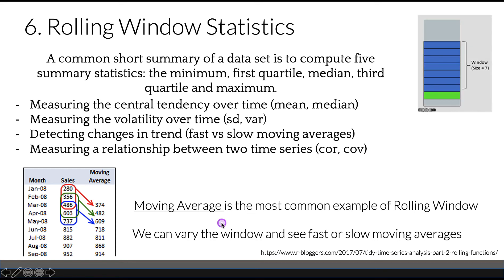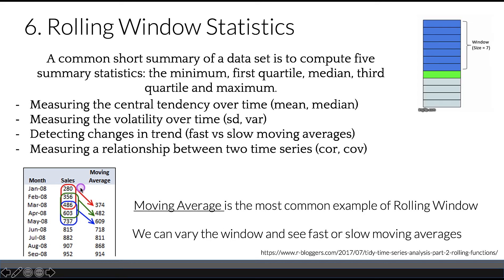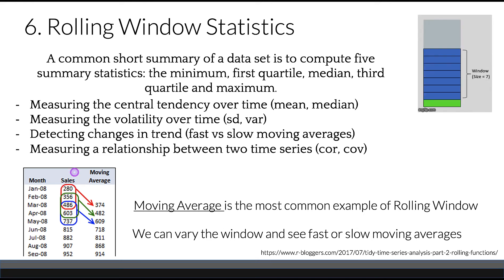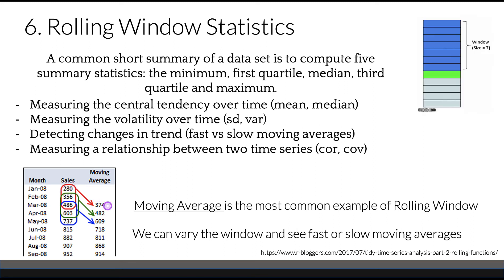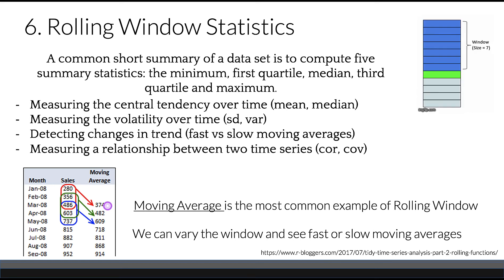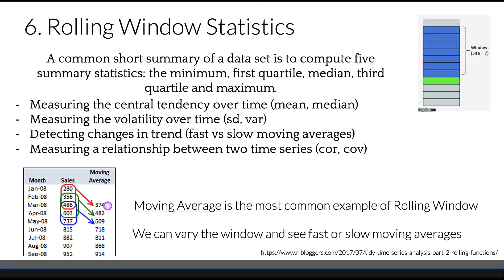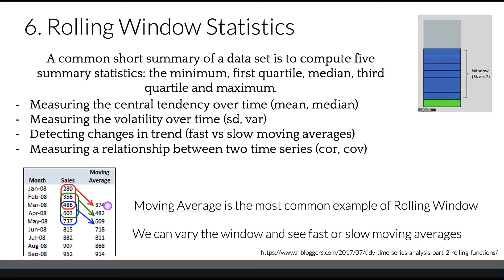Moving average is the most common example of a rolling window. By varying the window size, we can see how fast or slow our moving averages change. In a three-month rolling window example, moving averages allow us to visualize how an average changes over time, which is useful to see noise or detect trends. We can also compare fast and slow moving averages.